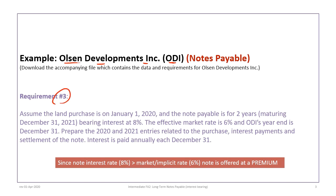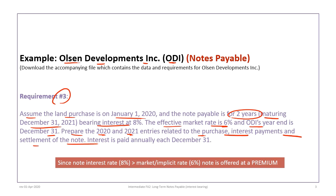This tutorial will focus on resolving requirement 3, and we have some different assumptions. The land is purchased on January 1st, 2020. It's a two-year note that matures December 31st, 2021, bearing interest at eight percent. The effective market rate is six percent, and ODI's year-end is still December 31st. We will prepare journal entries related to the purchase, the interest payments, and the settlement of the note, with interest paid annually each December 31st.